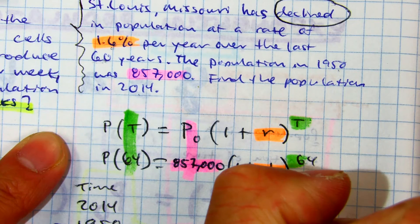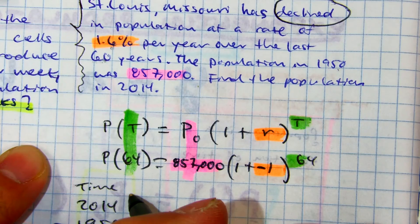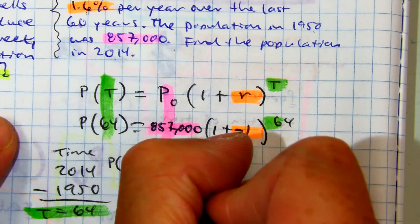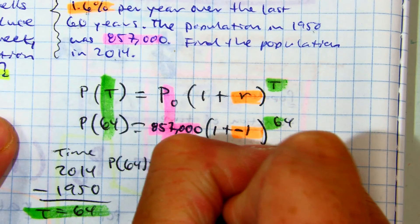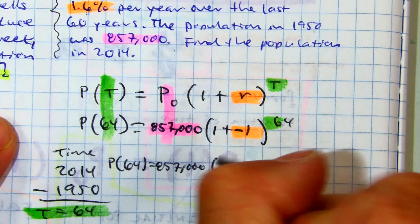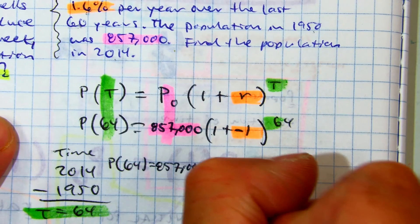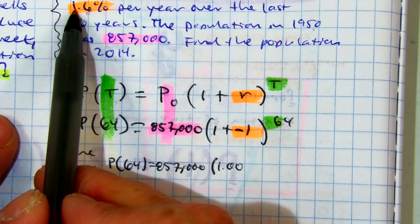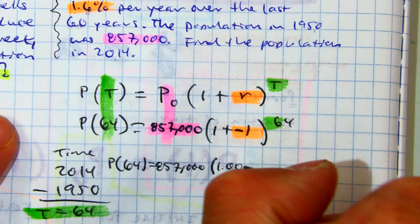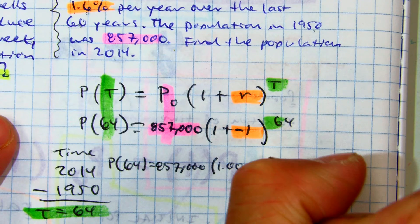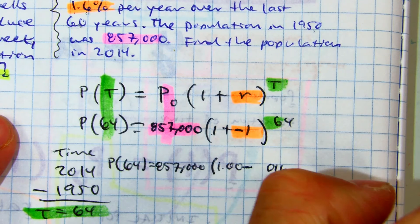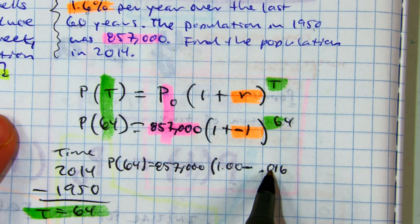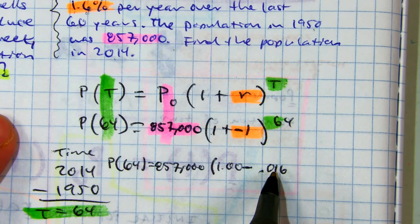Now, remember, we kind of did our decimals. Let me rewrite this a little bit cleaner. 857,000. Remember, 1 is something like 1.00. And 1.6%. Because if you take this and you multiply it by 100, you're moving it to decimal places, which gives you 1.6%.